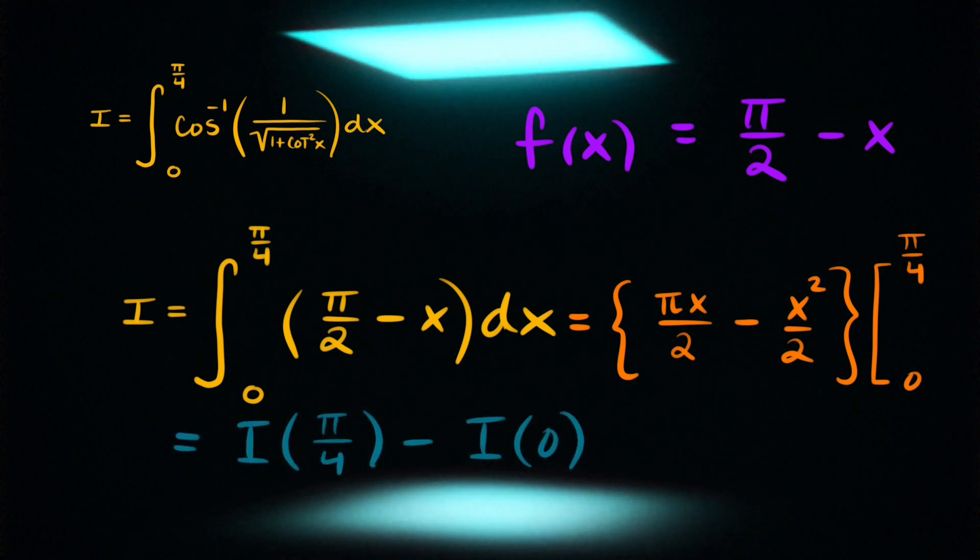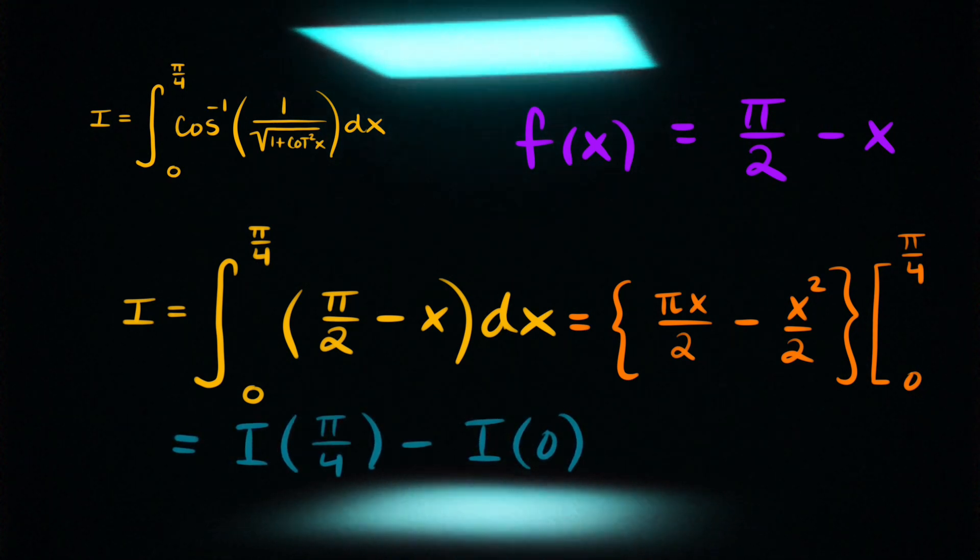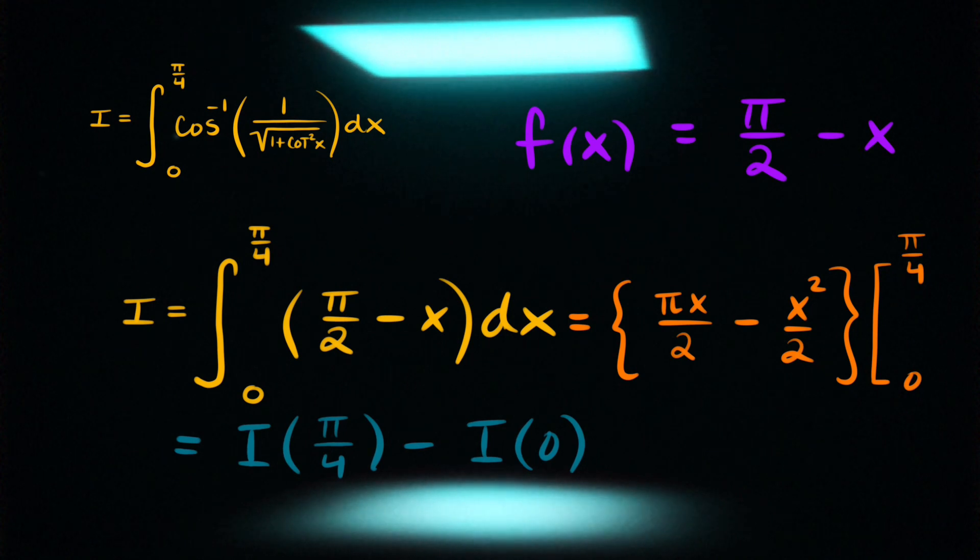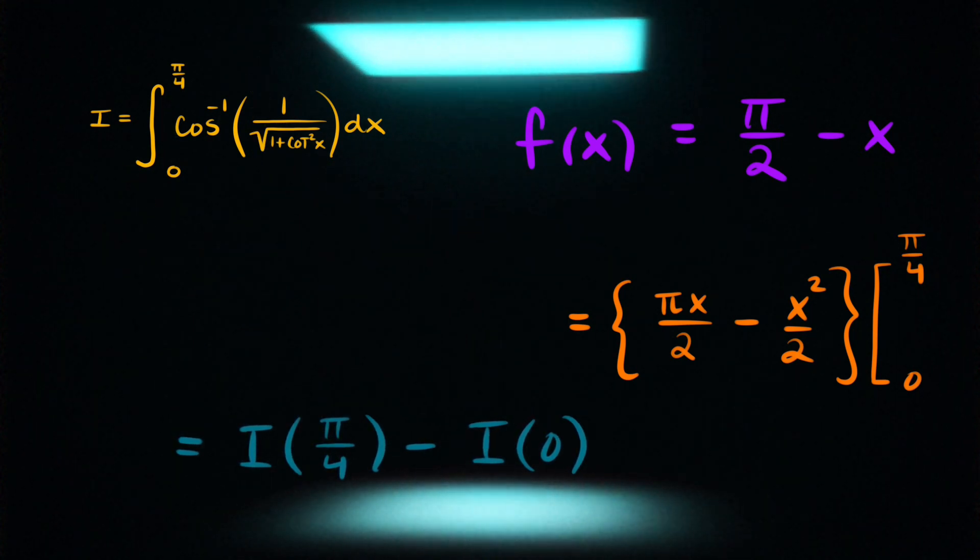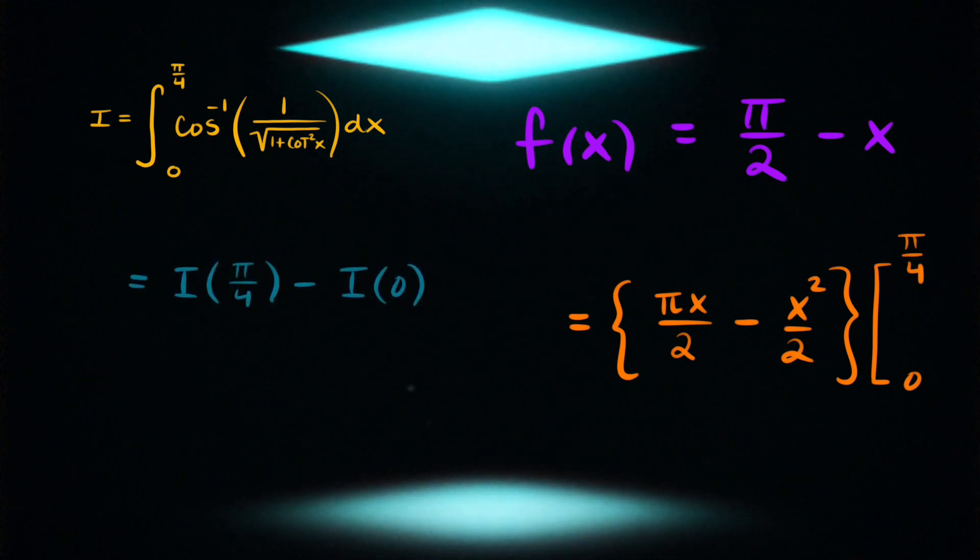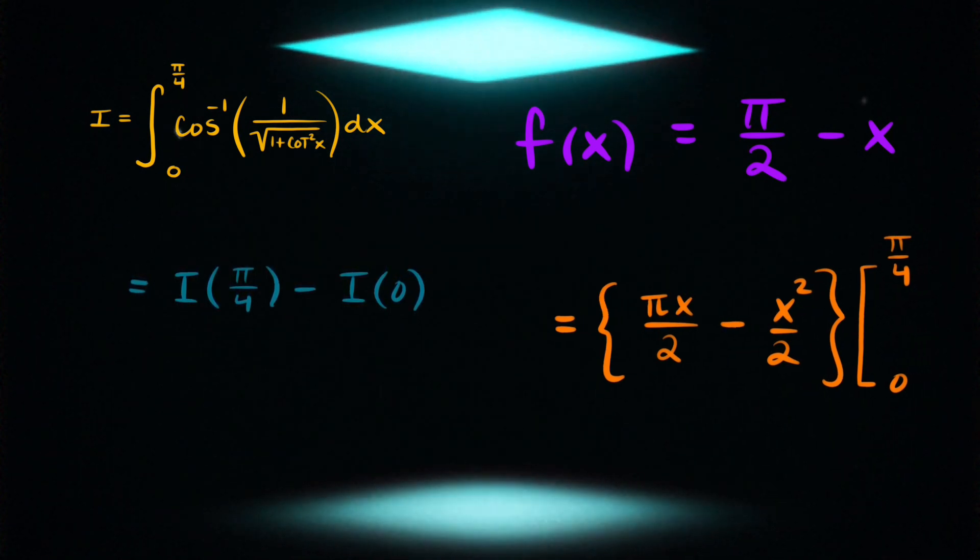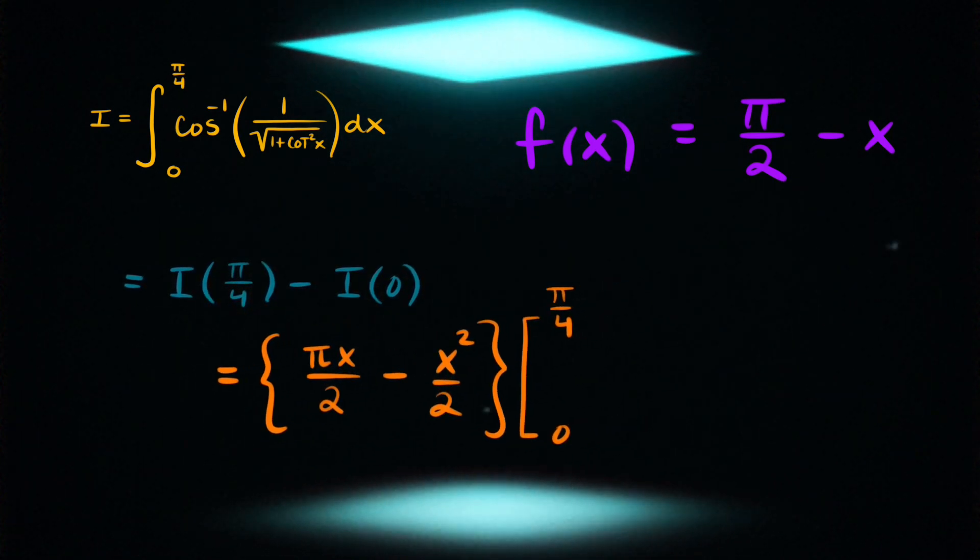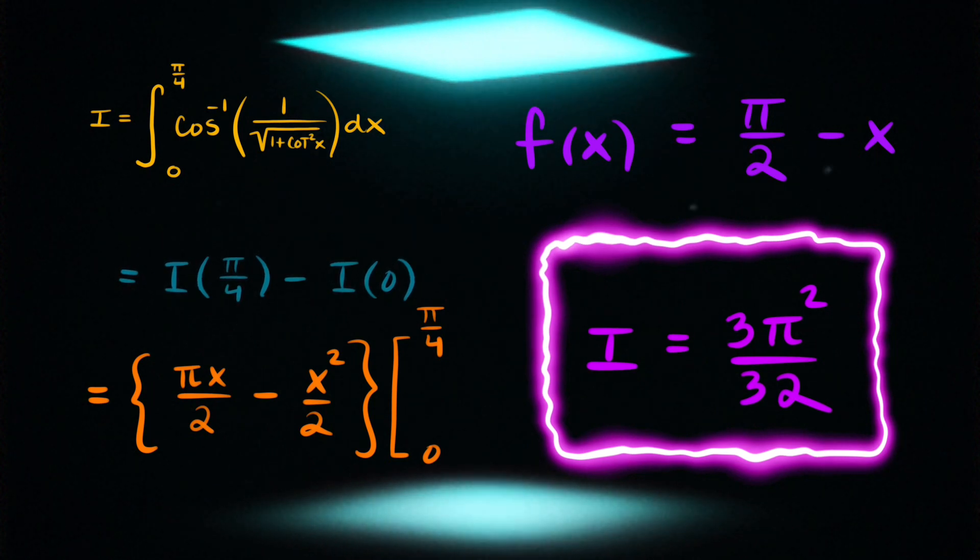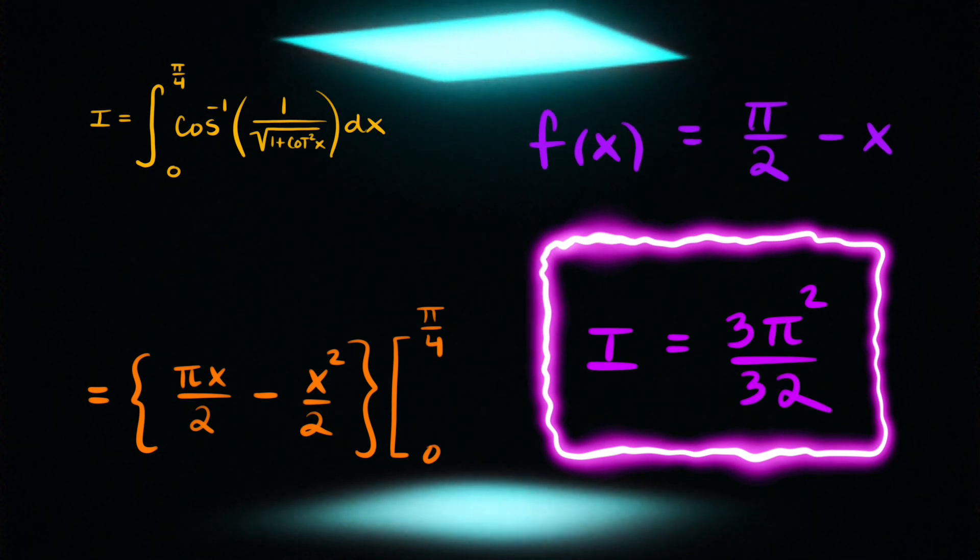And evaluating the antiderivative from 0 to pi over 4 using the fundamental theorem of calculus. We can then evaluate this integral. And the answer is 3 pi squared over 32.